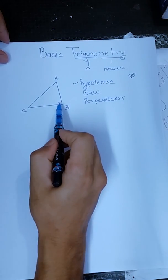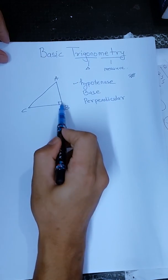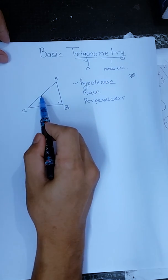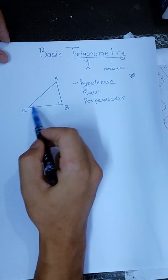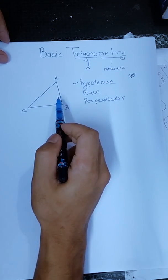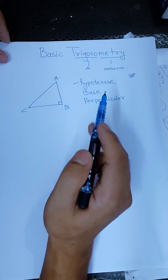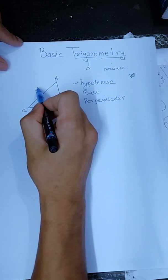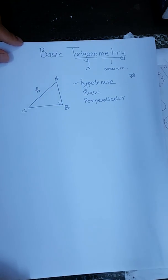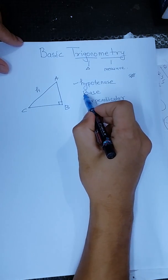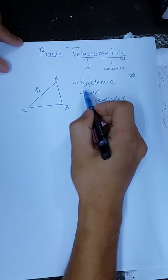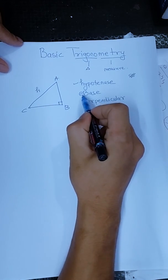Perpendicular. Hypotenuse — H. Base. So we have the right-angle triangle with its three sides labeled: Hypotenuse (H), Base, and Perpendicular.